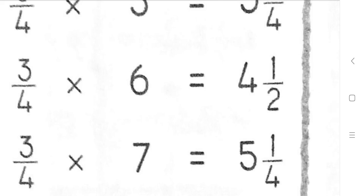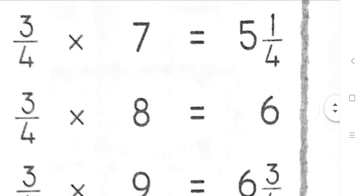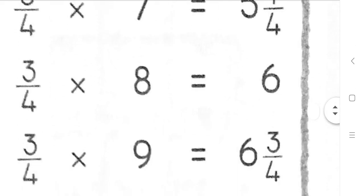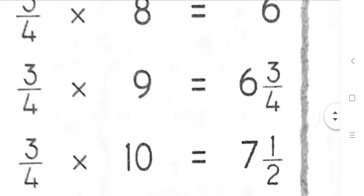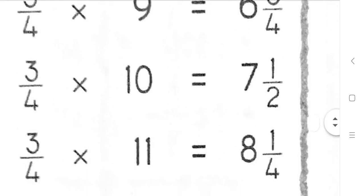3 quarters 8s are 6. 3 quarters 10s are 7 and a half. 3 quarters 11s are 8 and a quarter.